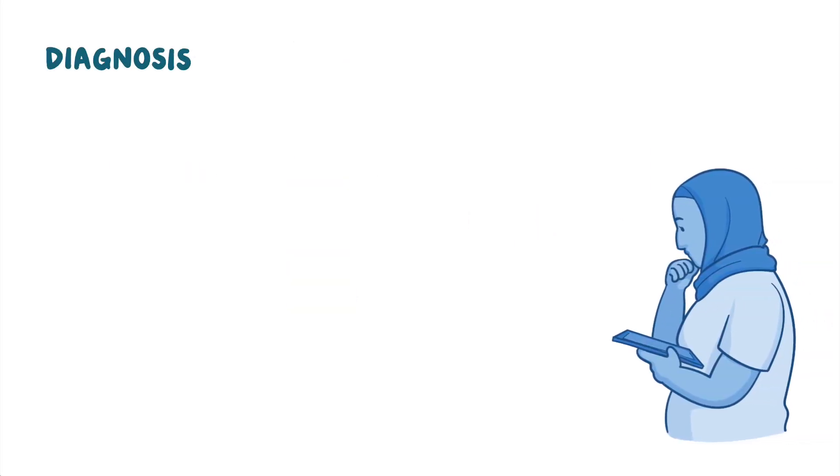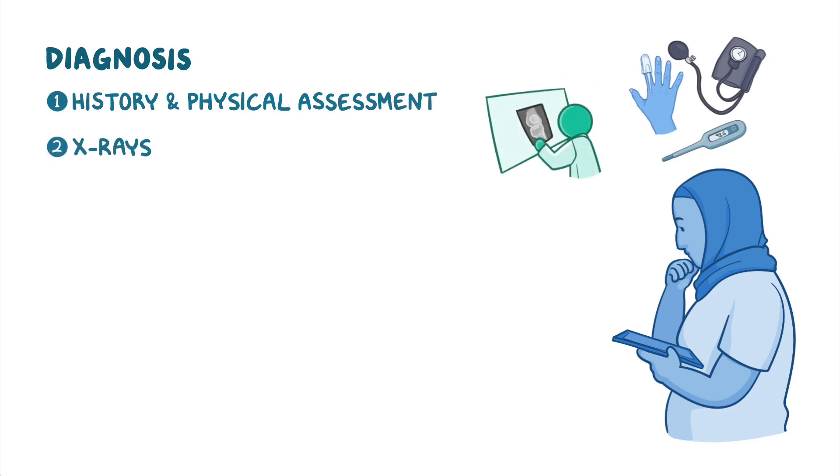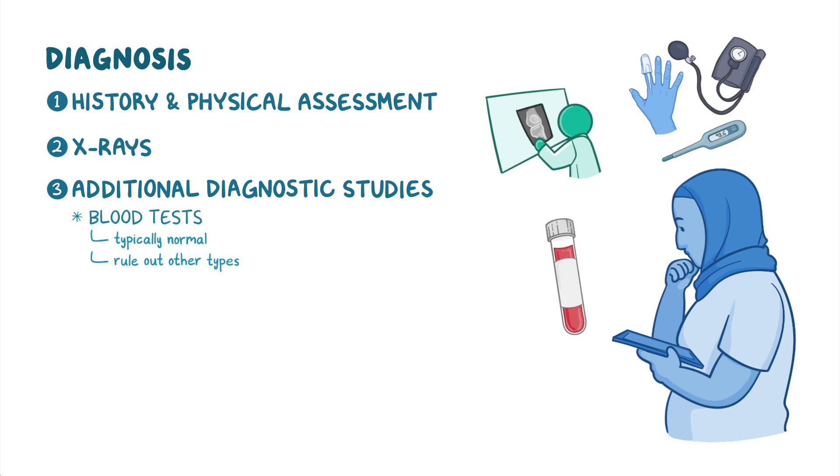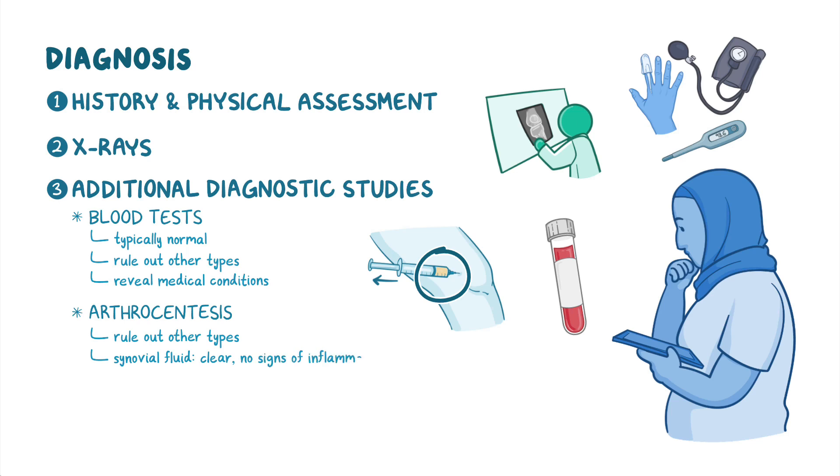Diagnosis of osteoarthritis starts with the client's history and physical assessment, followed by X-rays of the affected joints to confirm the diagnosis by showing cartilage loss and narrowing of the joint space. Additional diagnostic studies include blood tests, which are typically normal, but are required to rule out other types of arthritis and to reveal any associated medical conditions causing osteoarthritis. In some cases, arthrocentesis might be done to evaluate the synovial fluid and rule out other types of arthritis. In osteoarthritis, the synovial fluid is usually clear and has no signs of inflammation.